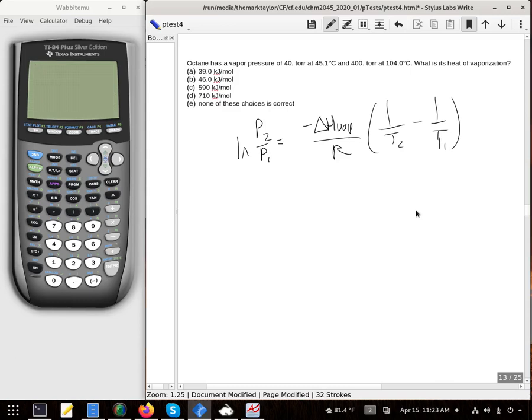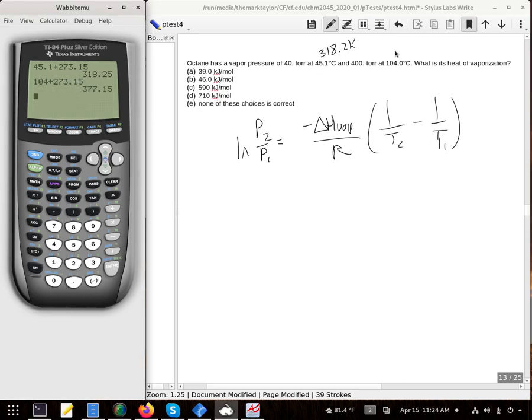I need to convert these temperatures. So I'm going to do that really quick. 45.1 plus 273.15, that is actually 318.2 Kelvin. And 104 plus 273.15 is 377.2 Kelvin.